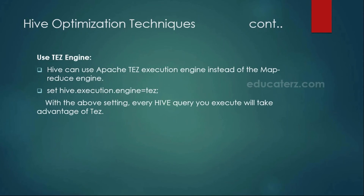Another technique is using the Tez engine. By default, Hive uses the MapReduce engine, but with the latest Apache Tez engine it improves Hive execution performance. By simply setting the Hive execution engine to Tez in the Hive shell or a properties file, you can improve performance. Internally, Tez uses parallel processing techniques and in-memory techniques, especially compared to MapReduce.